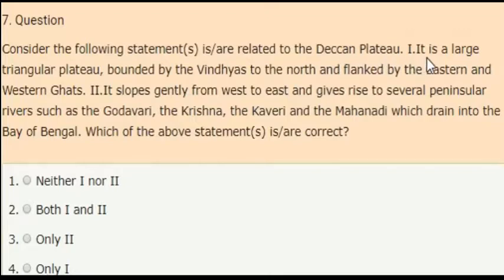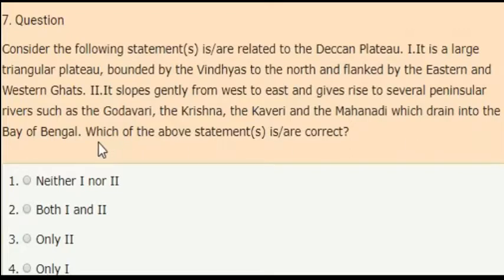Next question: consider the following statements related to the Deccan Plateau. First statement: it is a large triangular plateau bounded by the Vindhyas to the north and flanked by the Eastern and Western Ghats. Second statement: it slopes gently from west to east and gives rise to several peninsular rivers such as the Godavari, Krishna, Kaveri, and Mahanadi, which drain into the Bay of Bengal. The correct answer is both statements one and two are correct.